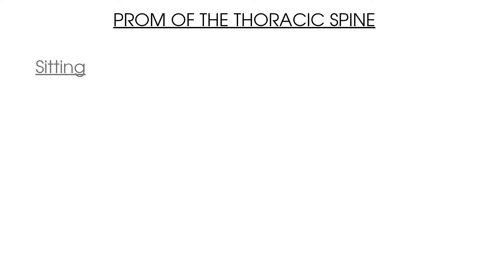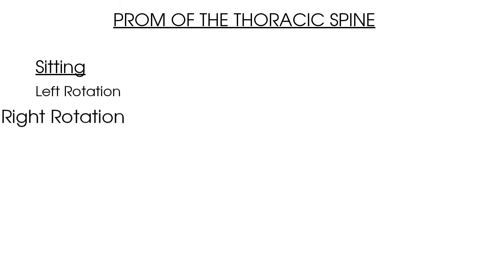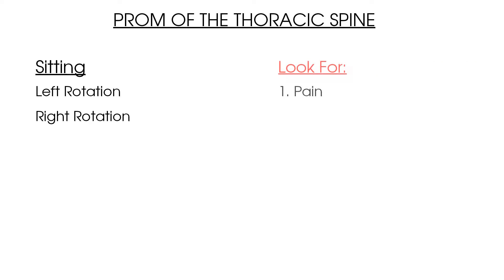To summarize this video on passive range of movement of the thoracic spine: first, complete passive range of movement with the patient in a sitting position. Test passive left thoracic rotation and passive right thoracic rotation. When completing your passive tests, be aware of your handling, and for each movement make a note of pain, range, and end feel.